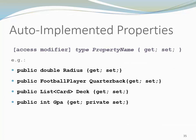I could also have a restricted setter. For example, a public GPA with a private set. I could also have a get only. This is possible since C# 6.0. Before that, both get and set had to be specified in an auto-implemented property.